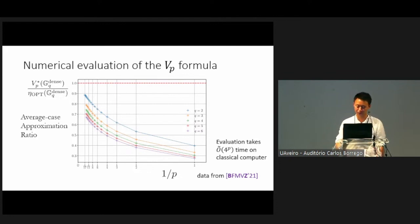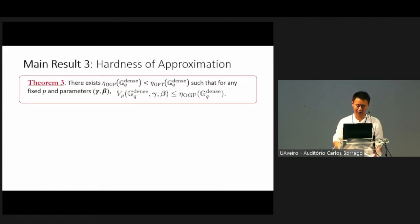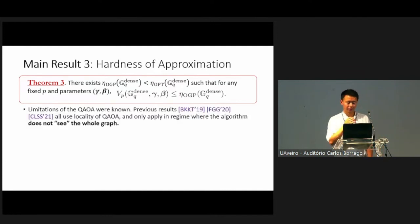It turns out that for at least some subclass of these problems, we can actually have a provable result that shows a negative, which is there actually exists some number that's strictly worse than the optimum value, such that for any fixed level p and parameters gamma beta, the QAOA performs strictly worse than this threshold, which is set by the overlap gap property.